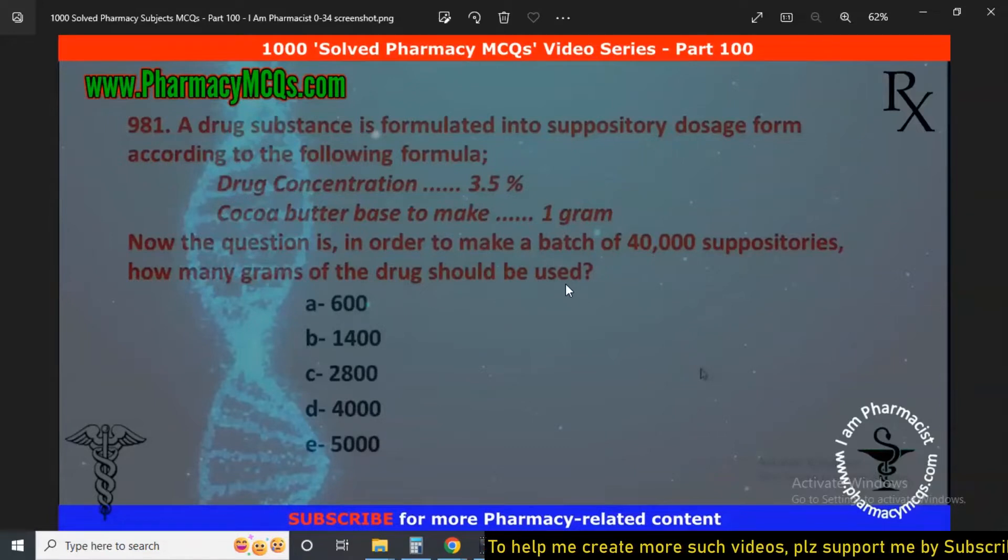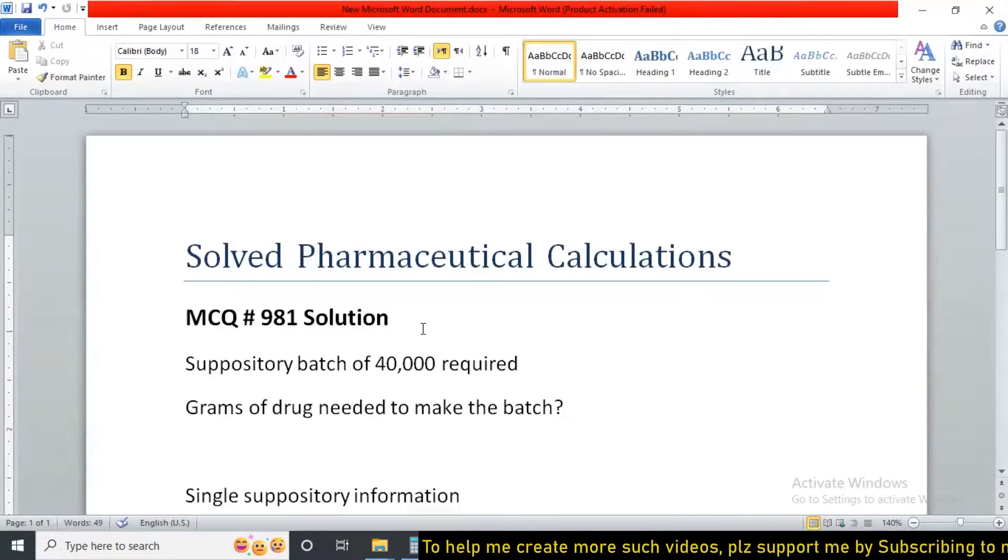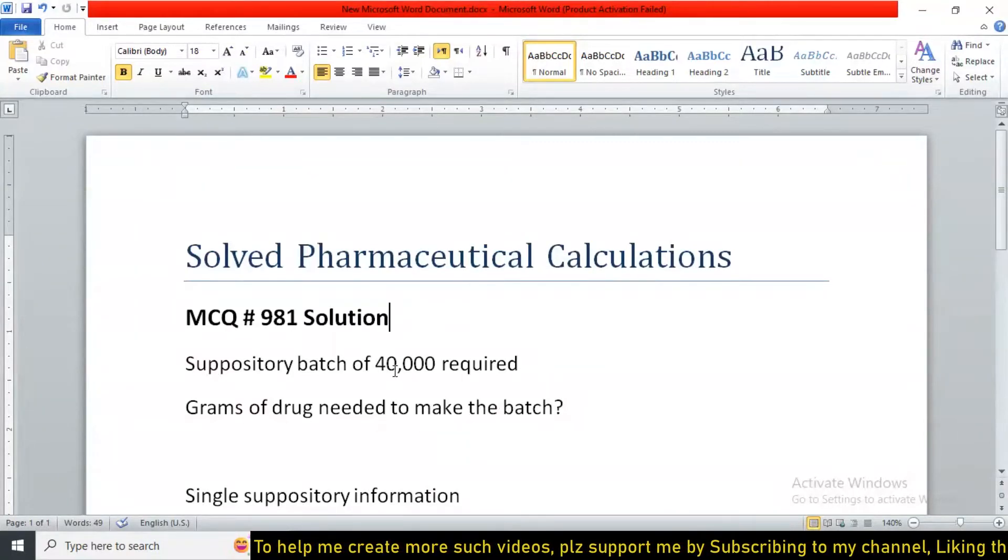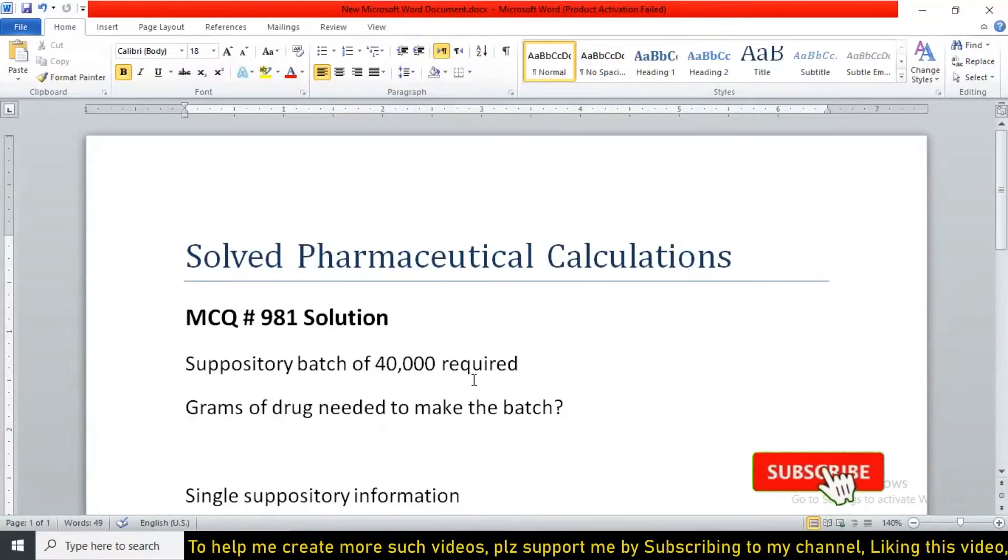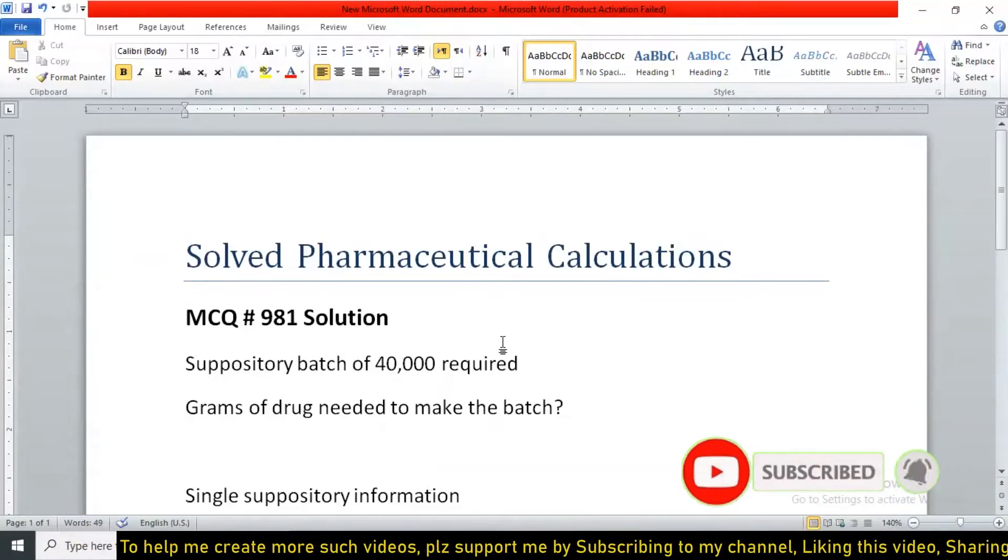This calculation problem can be solved as follows. In this question we are asked to calculate the grams of the drug needed to make a batch of 40,000 suppositories. Actually, the data given for a single suppository is: a single suppository contains drug concentration of 3.5% and base quantity sufficient to make one gram.